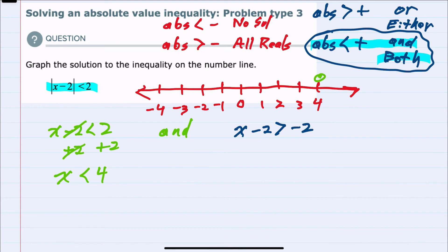x is less than 4 would be everything to the left of 4. The equation on the right-hand side, adding 2 to the other side, leaves us with x is greater than 0, and that would be everything to the right of 0.